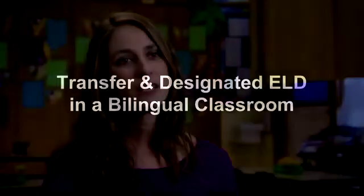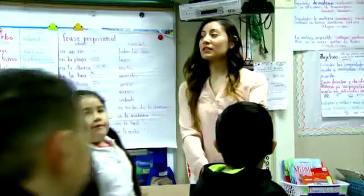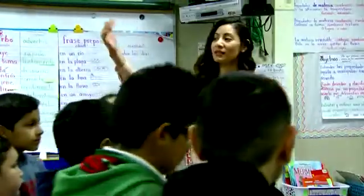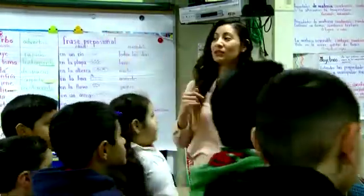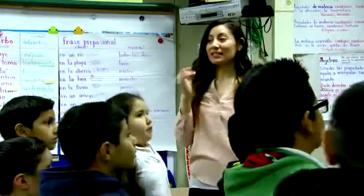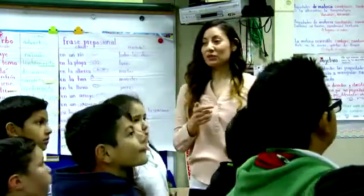Today we got a chance to be in Erika Montes' second grade classroom. This is a second grade biliteracy classroom with the 90-10 model here at the site. The kindergartners are in 90% Spanish and 10% English, and it goes down by 10%. So by second grade, she is 70% in Spanish and 30% in English.